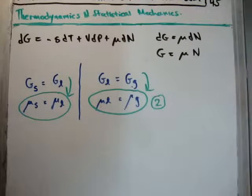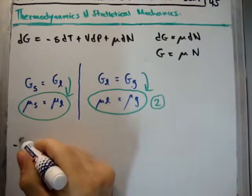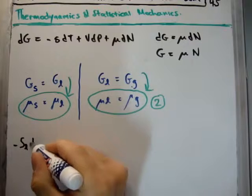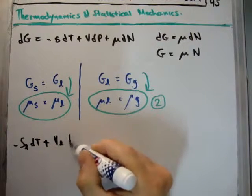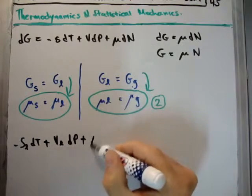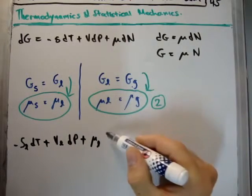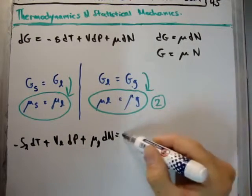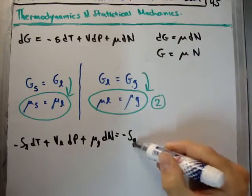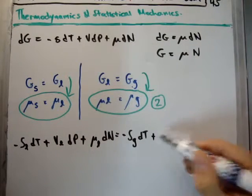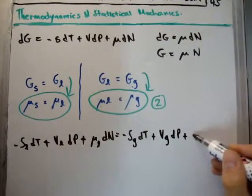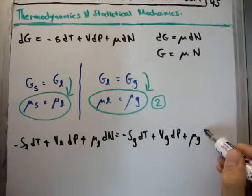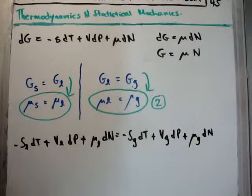Let's look at the thermodynamic identity. We have -S_liquid dT + V_liquid dP + μ_liquid dN = -S_gas dT + V_gas dP + μ_gas dN.